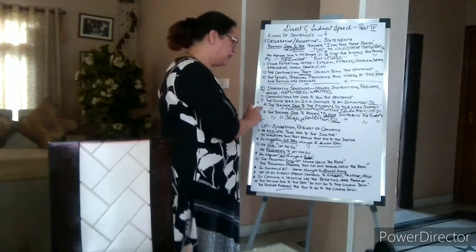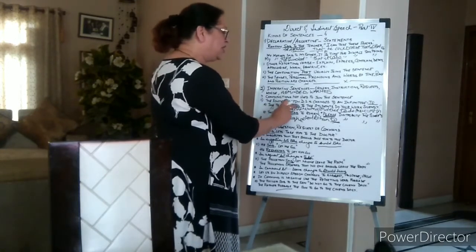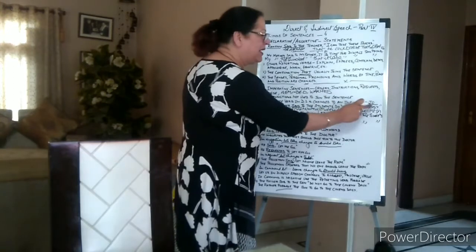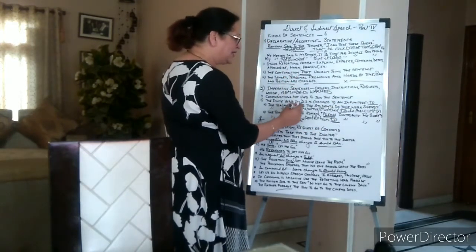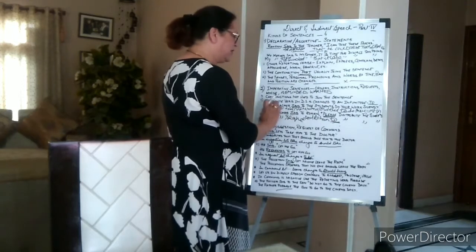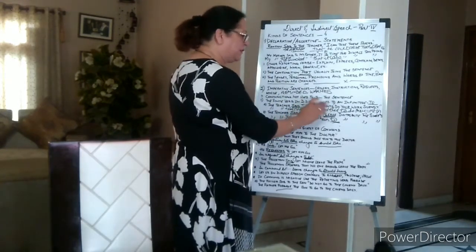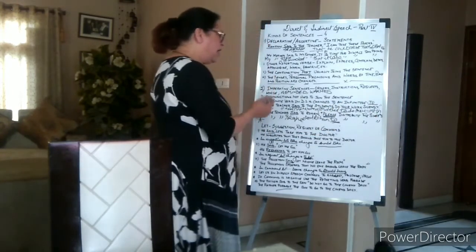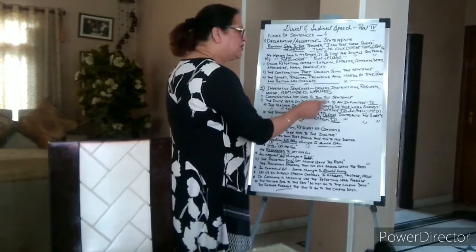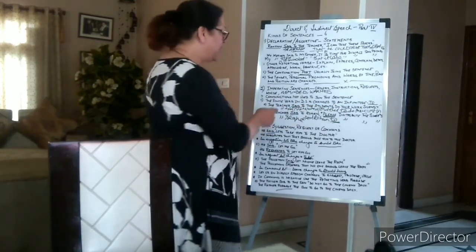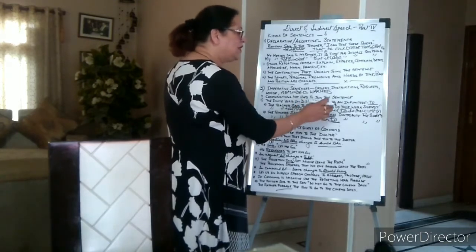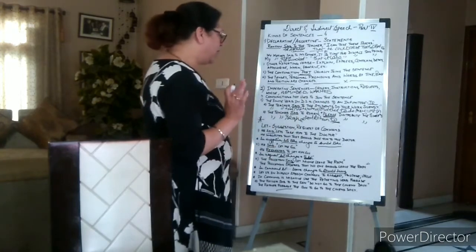Let's go to the example. The teacher said to the students, 'Do your work silently.' The teacher said to the students is the reporting speech; the quoted part is the direct speech. When we change this, 'said to' becomes 'told'. But instead of 'told', we can say the teacher instructed — or the teacher ordered — the students to do their work silently.